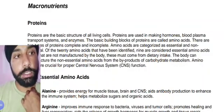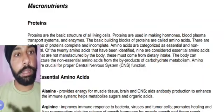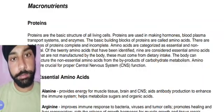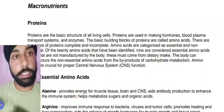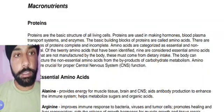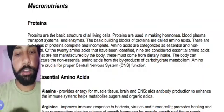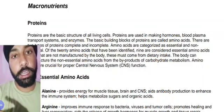Proteins are used in making hormones, blood plasma, transport systems, and enzymes. The basic building blocks of proteins are amino acids. There are two types of amino acids: essential and non-essential.